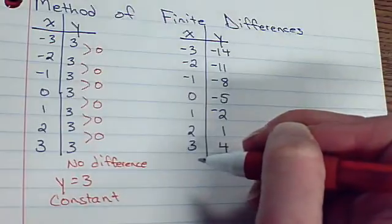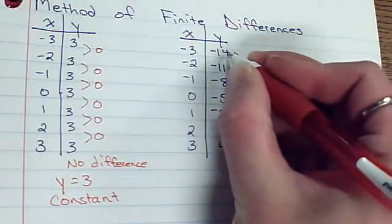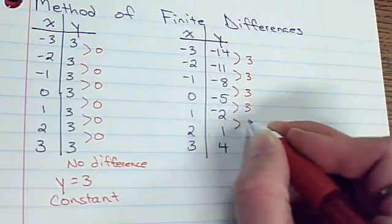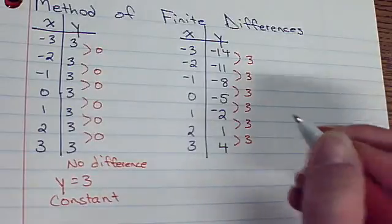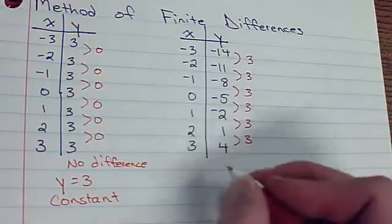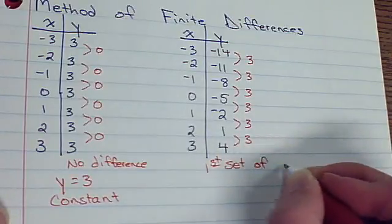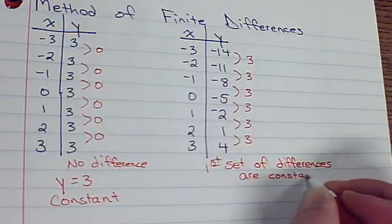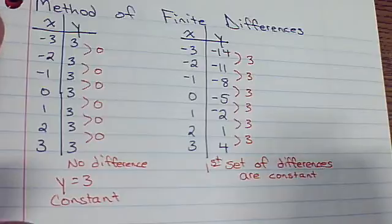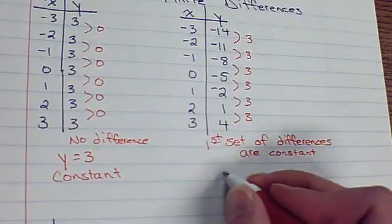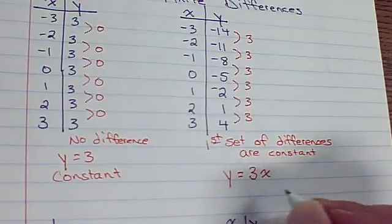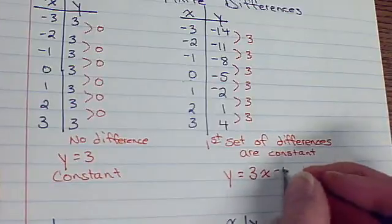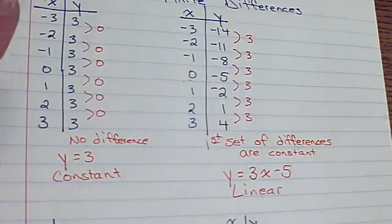Now let's look at this table — actually this is the one we just had. When I take the y-values, to go from negative 14 to negative 11 is up 3. Then up 3, up 3, up 3, up 3 — we're going up 3 every time. This is the first set of differences that are constant. That rate of change remaining constant is slope. So y equals 3x. The y-intercept occurs when x is 0, and we get so lucky — it's right there. This would be a linear function, so we were right on our guess.